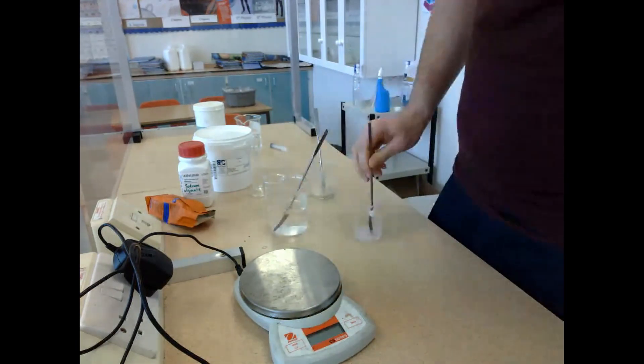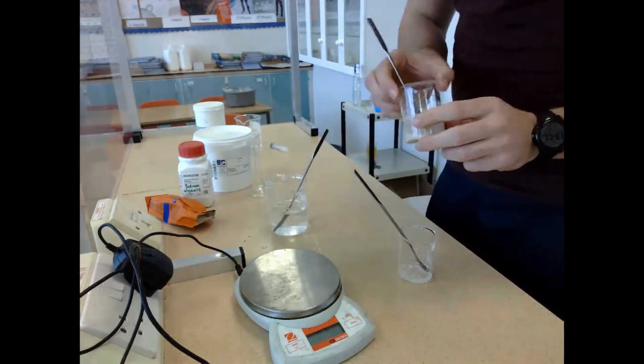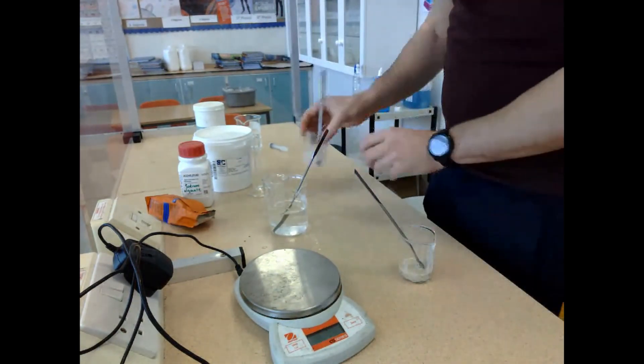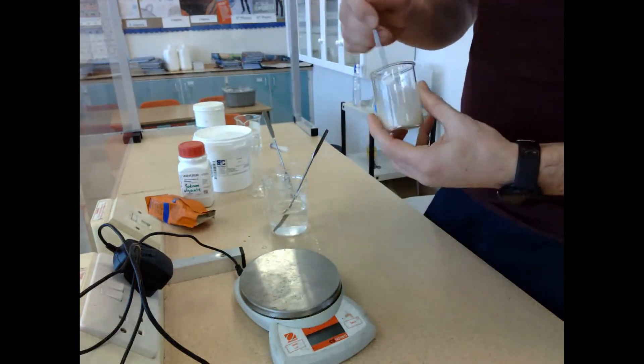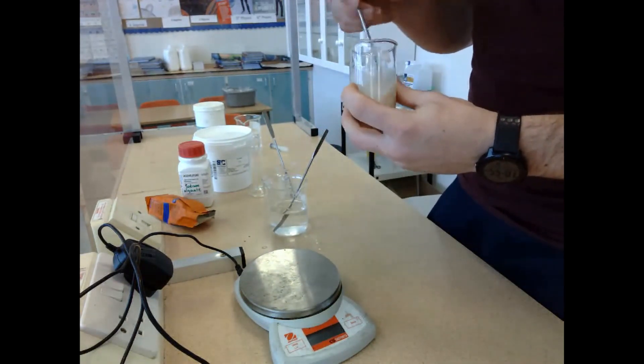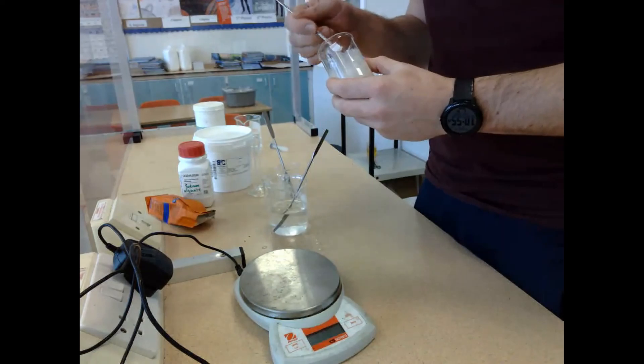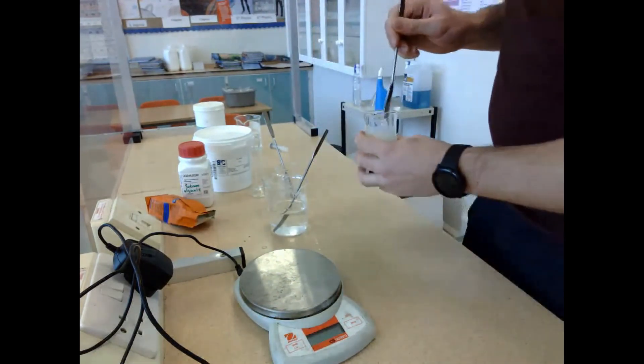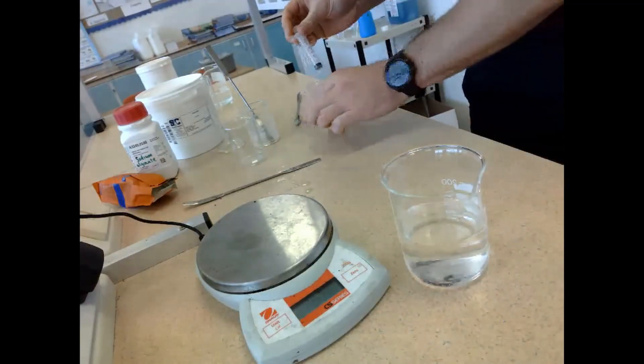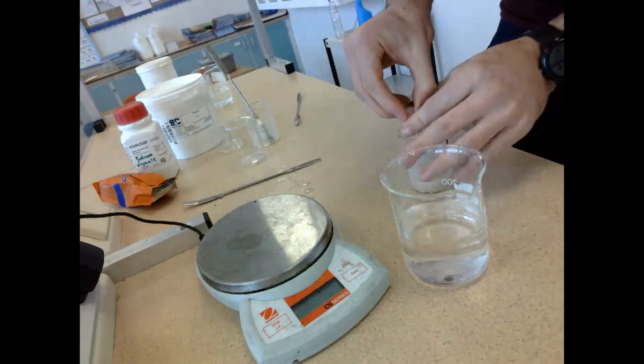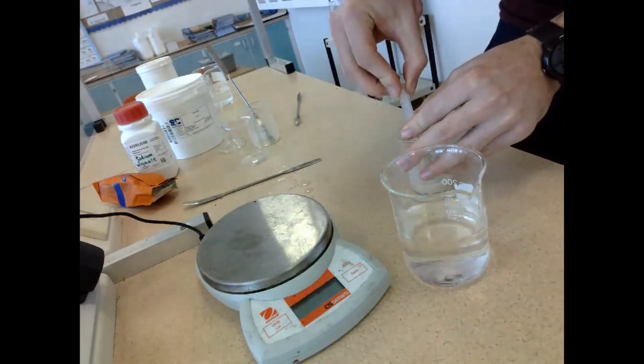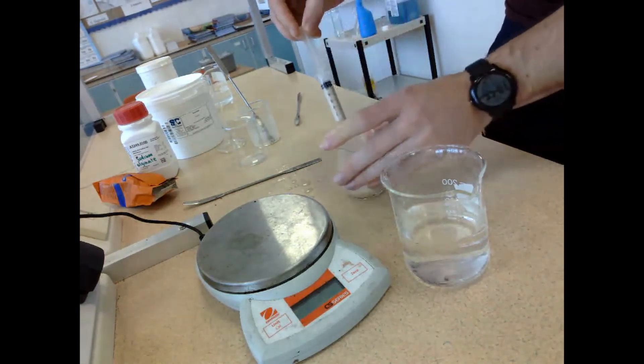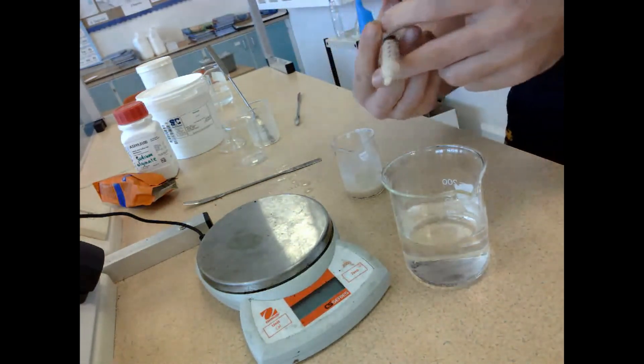There I am now mixing the yeast into the sodium alginate. Again, I spent ages trying to mix this up—it's very difficult because it is a gel-like substance. Once I was happy that it was all dissolved, I went off and got my syringe. With the syringe, I'm going to try and take up a full syringe worth of this sodium alginate and yeast solution. I had to do this twice, but I'm just going to show you what it looked like once.